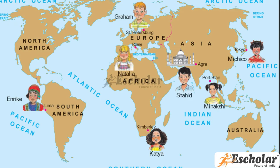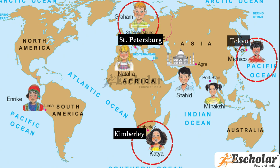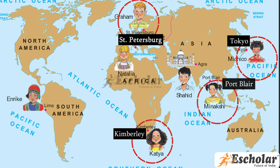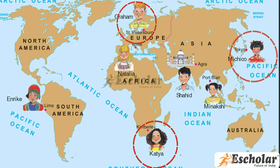For Graham in Saint Petersburg, for Katya in Kimberly, for Michiko in Tokyo, and Minakshi in Port Blair. Graham, Katya, Michiko, Natalia, and Minakshi have each answered from their respective locations.